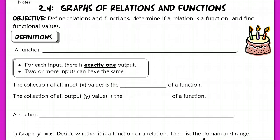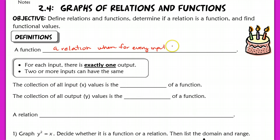So a function is just a relation that has, for every input, exactly one output. So it's a relation where, for every input, there is exactly one output. I want you guys to write down this definition, because this is a formal, mathematical definition of it.